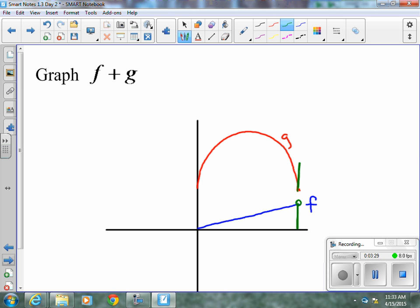f at this point right here has a y value of about this long. If I add that length to my g, that, at the top of it, is going to be where my new point is for f plus g. Let's do that a couple places. So like right here, we get a y value of about this much. We add that directly above it to the g, and we get another point right here.